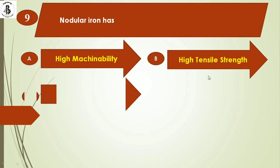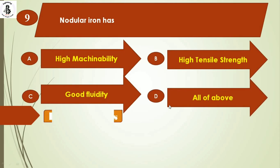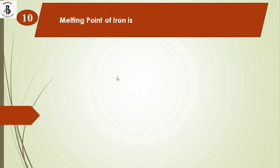The next question: nodular iron has option A) high machinability, option B) high tensile strength, option C) good fluidity, option D) all of the above. Nodular iron, also known as ductile iron, has graphite present as tiny balls or spheroids (nodules). Due to this structure, it has high machinability, high tensile strength, and good fluidity. The right answer is option D, all of the above.